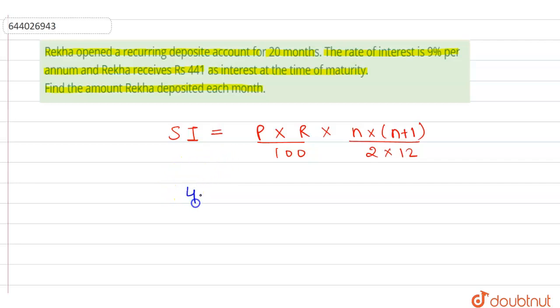The interest is 441 = P × 9/100 × (20×21)/24, where we have to find P.